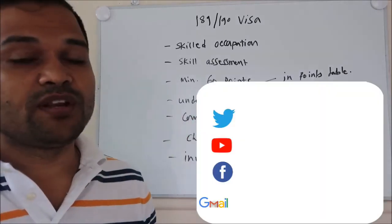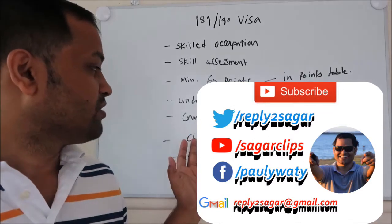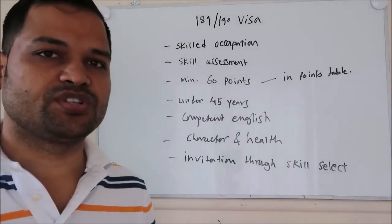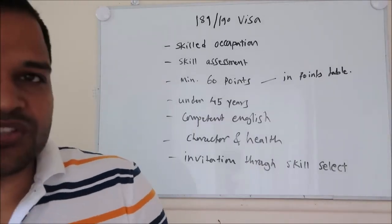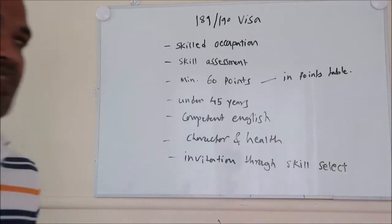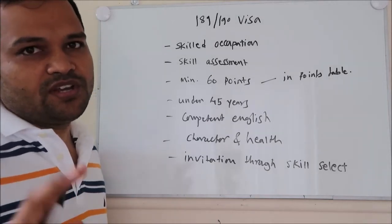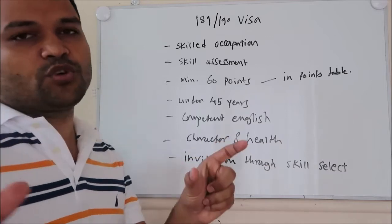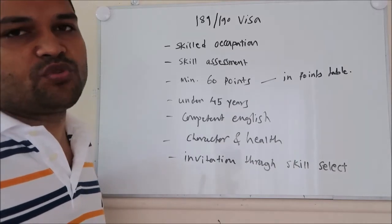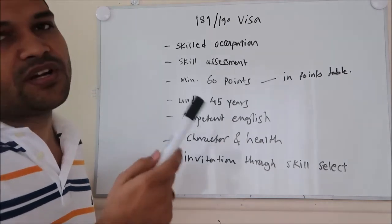To apply for the 189 or 190 visa in Australia, the most important point is that your occupation must be a scheduled occupation. Your occupation should be in the scheduled occupation list published by the Australian government. I will give the link down in the description so you can check if your occupation is in the list. There are two categories of occupations: short term, and medium to long term. Your occupation has to be in the medium to long term list to be able to apply for the 189 or 190 visa.